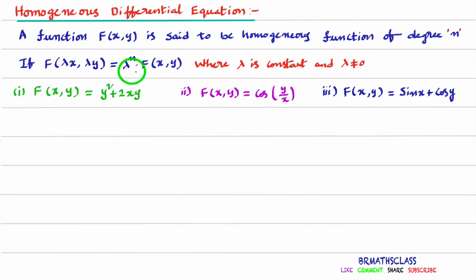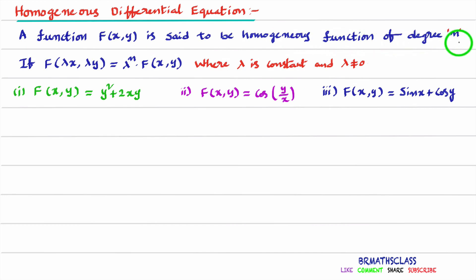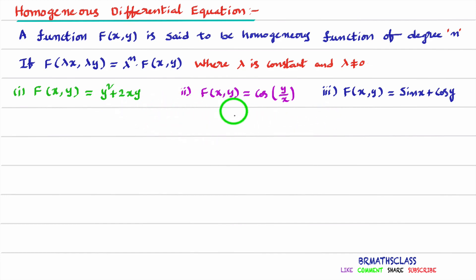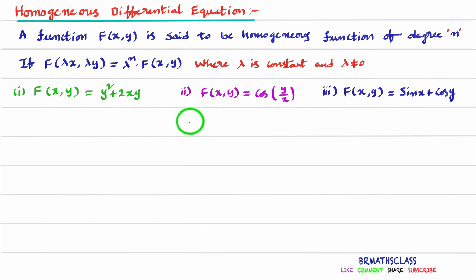Here, λ is a constant and λ is not equal to zero — that means λ is a non-zero constant. A function f is said to be a Homogeneous Function of degree n if we are able to express f(λx, λy) in the form λⁿ into f(x, y). We will check these three examples — two are homogeneous functions and one is not.